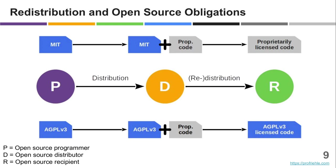Copyleft licenses, however, require that the original license — for example the GPL version 2 or the AGPL version 3 — propagates. So if you as a software vendor receive some open source code under a copyleft license such as the AGPL version 3, and combine it with your own code, you can only pass it on or sell it to customers if you use the same license under which you received the open source code. That requirement then also applies to your proprietary code.